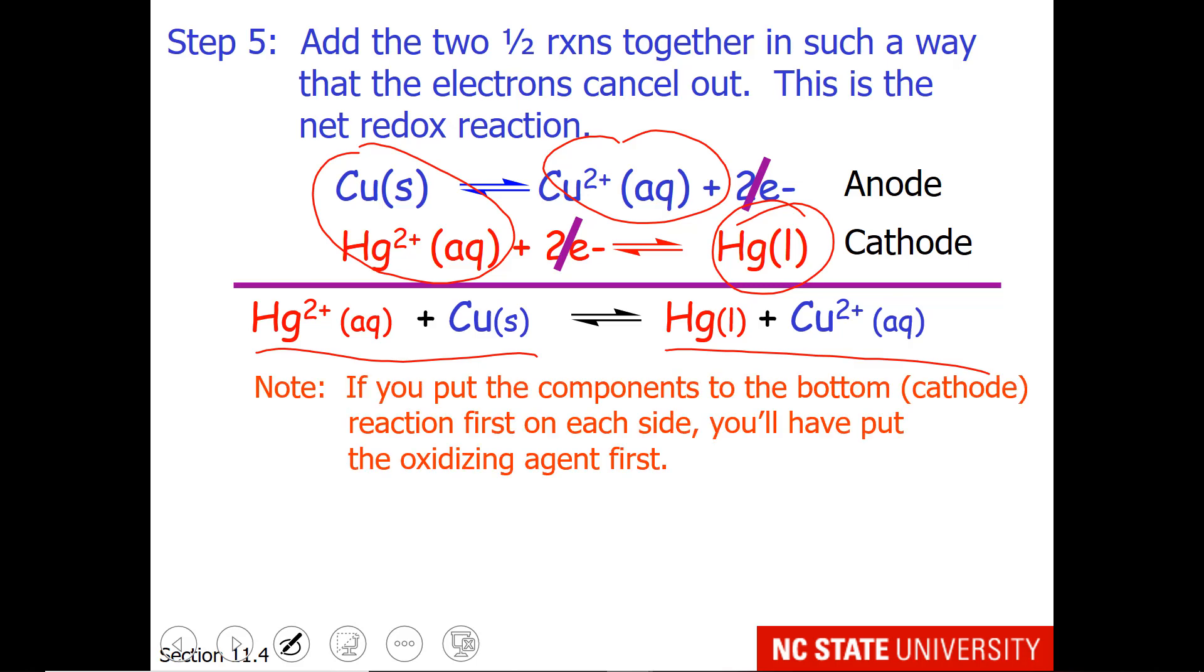There was a time in WebAssign when WebAssign couldn't tell the difference between mercury 2+ plus copper and copper plus mercury 2+. So students had to write the oxidizing agent first. You notice if you take the cathode component and write it as your first species, then you've put the oxidizing agent first because remember the oxidizing agent gets reduced.